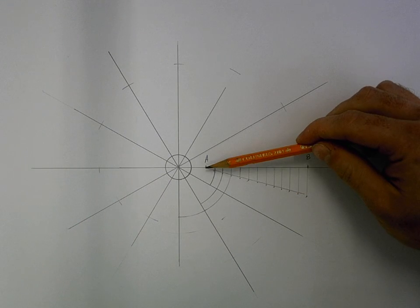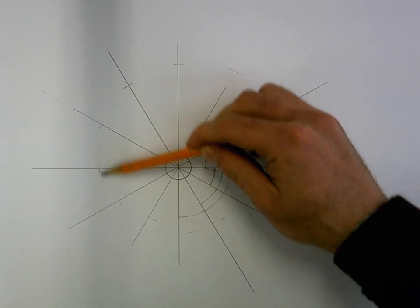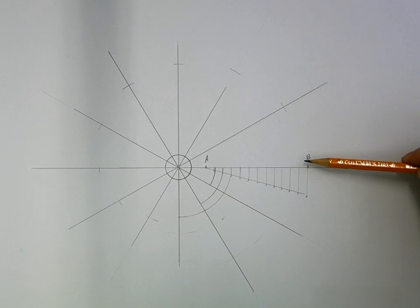So it grows, as you can see, it's going to wrap around, and it's going to increase in size, and that's how you draw your Archimedean spiral.